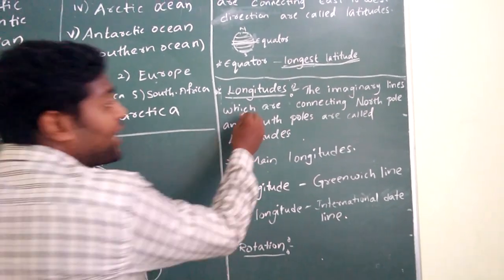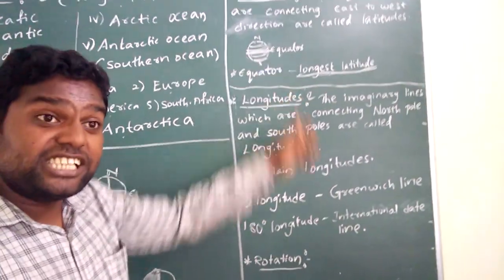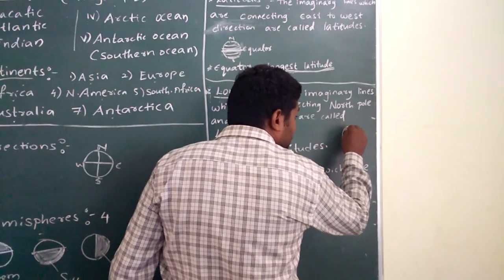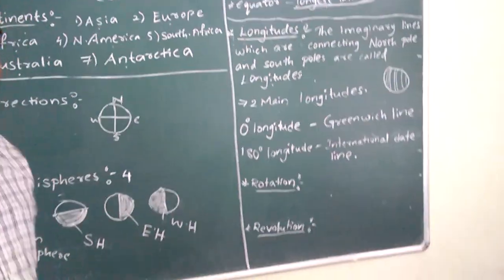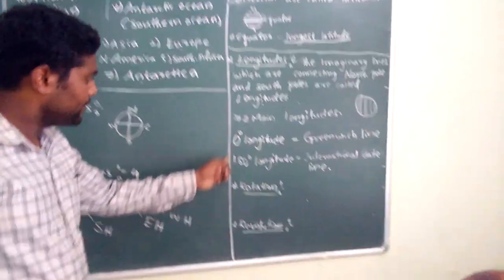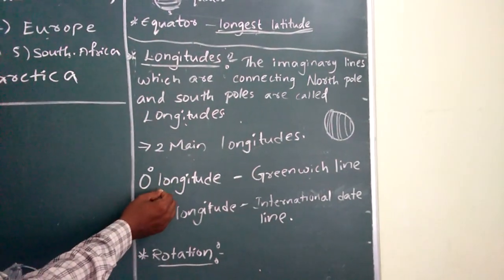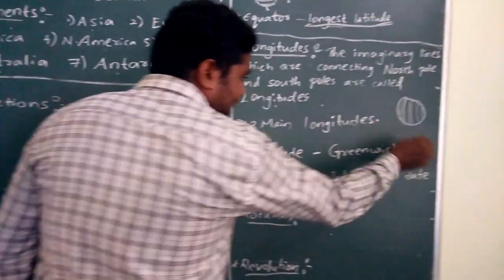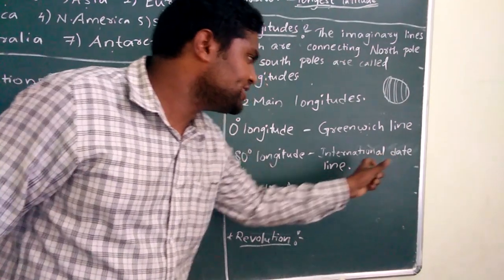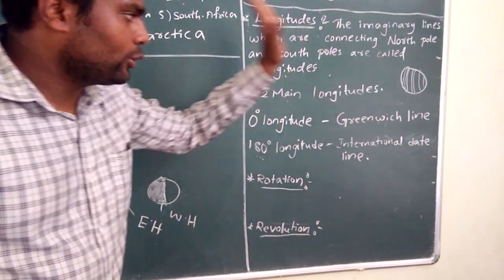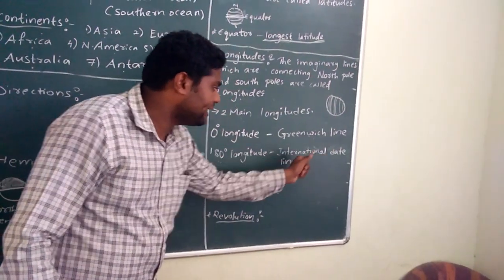The imaginary lines which are connecting the north pole and south pole are called longitudes. We have two main longitudes: the first one is 0 degree longitude, which is also called the Greenwich line — very important. Coming to the second one, 180 degree longitude, which is also called the International Date Line.